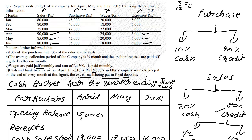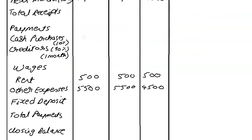For payments: cash purchases is 10% of each month's purchases. 10% of 50,000 = 5,000 for April; 10% of 45,000 = 4,500 for May; 10% of 35,000 = 3,500 for June.